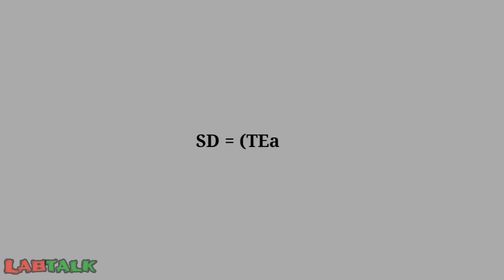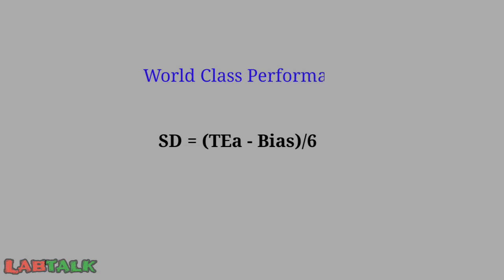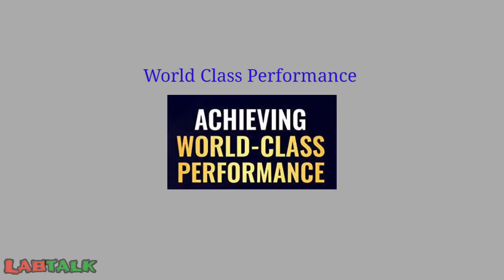Similarly, replacing 4.5 sigma with 6 sigma gives the standard deviation required for world class performance. So this is how the target standard deviation or target CV percentage can be defined by the laboratory. Quality can be monitored using individualized parameters, where the CV percentage or standard deviation is customized for each test parameter.